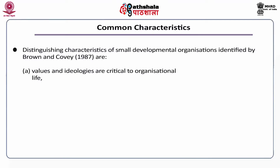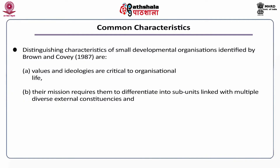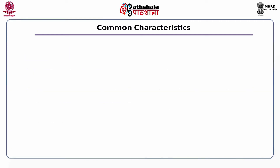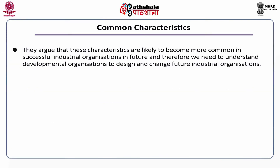Distinguishing characteristics of small developmental organizations identified by Brown and Covey (1987) are: (a) values and ideologies are critical to organizational life; (b) their mission requires them to differentiate into subunits linked with multiple diverse external constituencies; and (c) they are loosely organized providing considerable discretion and flexibility to their members. They argue that these characteristics are likely to become more common in successful industrial organizations in future, and therefore we need to understand developmental organizations to design and change future industrial organizations.